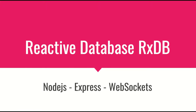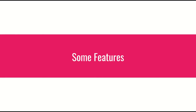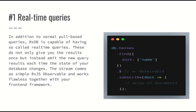For a small introduction, we'll talk about some of its features. The first feature is real-time queries. In addition to normal pull-based queries — which in the documentation they call 'pull-based' because you create a query, give it to the database, pull some data, and do whatever you want with it — RxDB is also capable of having real-time queries. These don't only give you the results once, but instead emit new query results each time the state of your database changes.